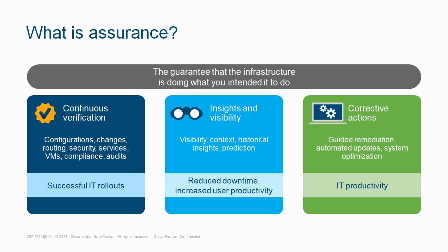In terms of assurance, if any configuration change is made — in routing, switching, or wireless — everything is updated to DNA Center. It provides visibility and contextual information from the last weeks, hours, or months, and it is continuously optimizing the network.